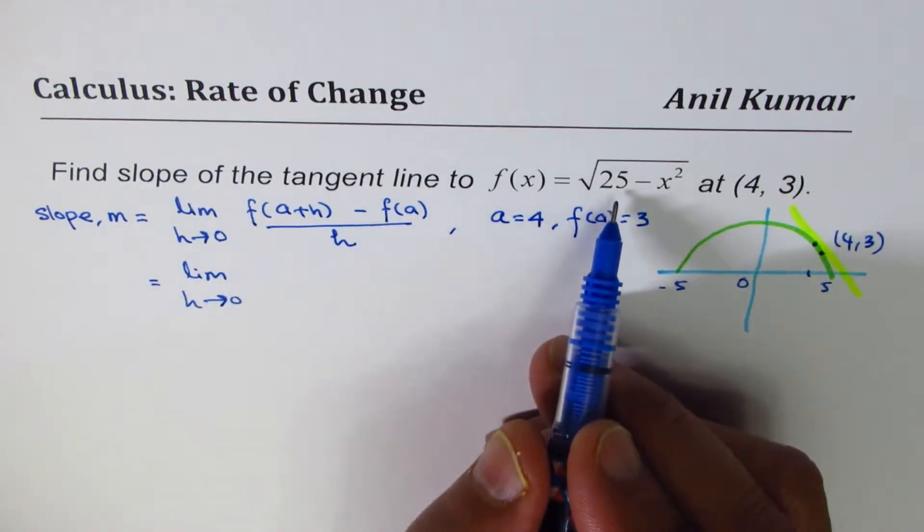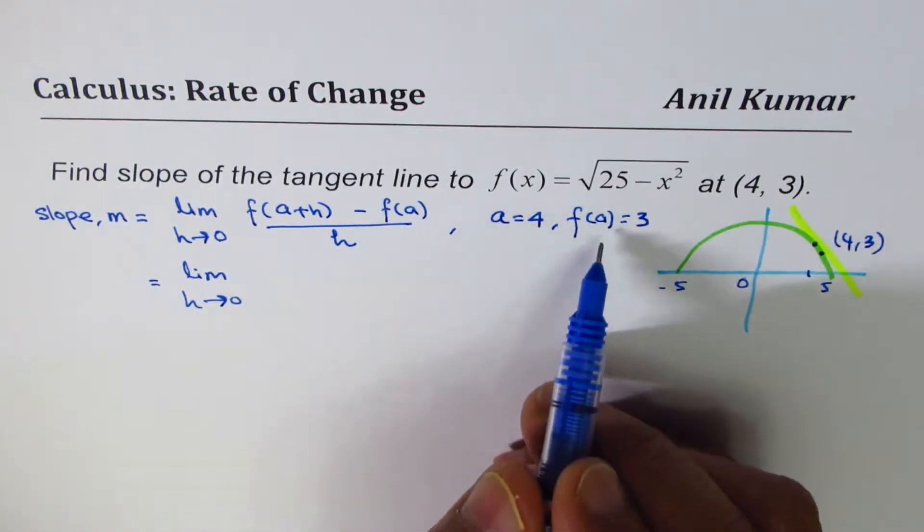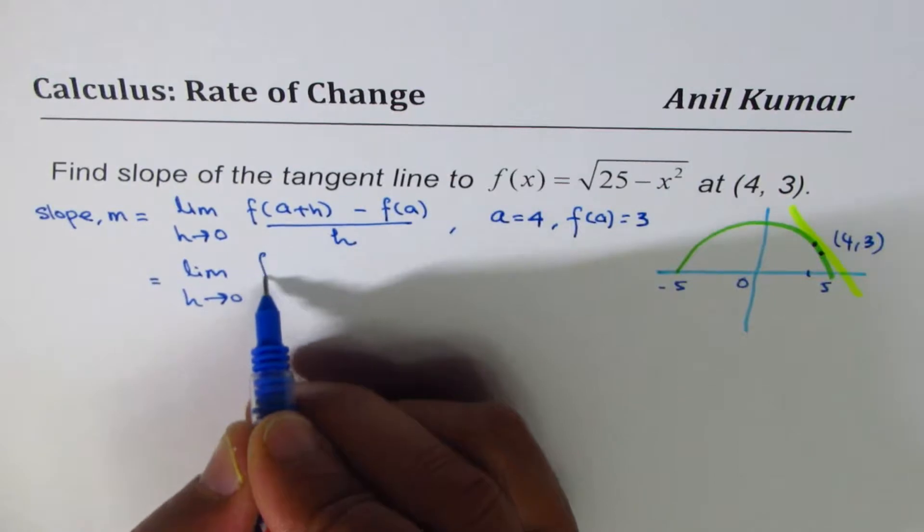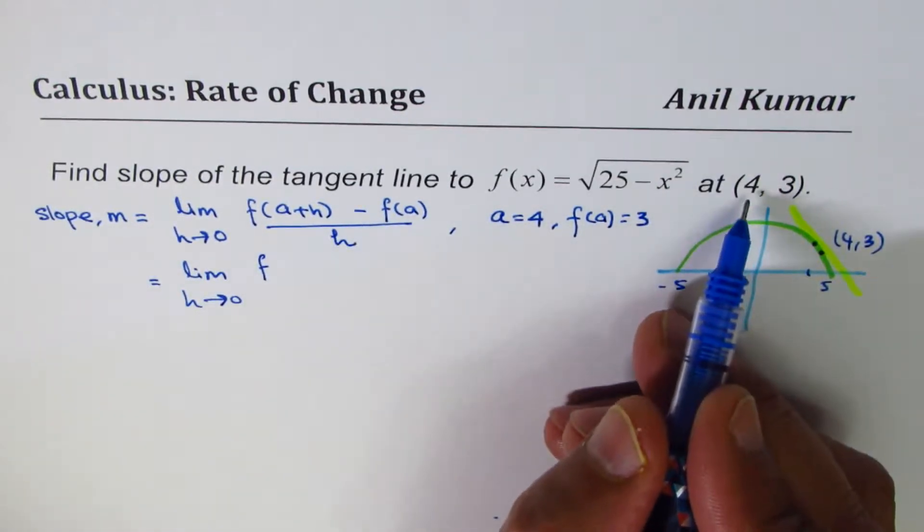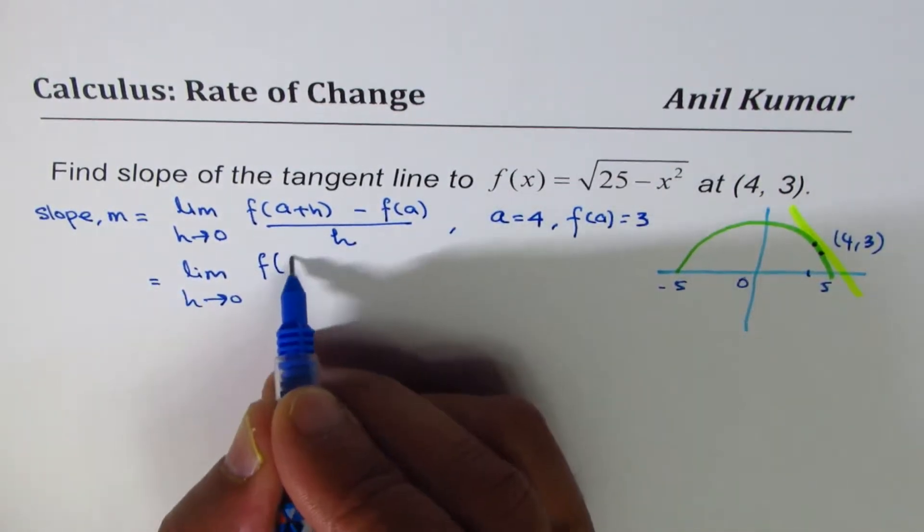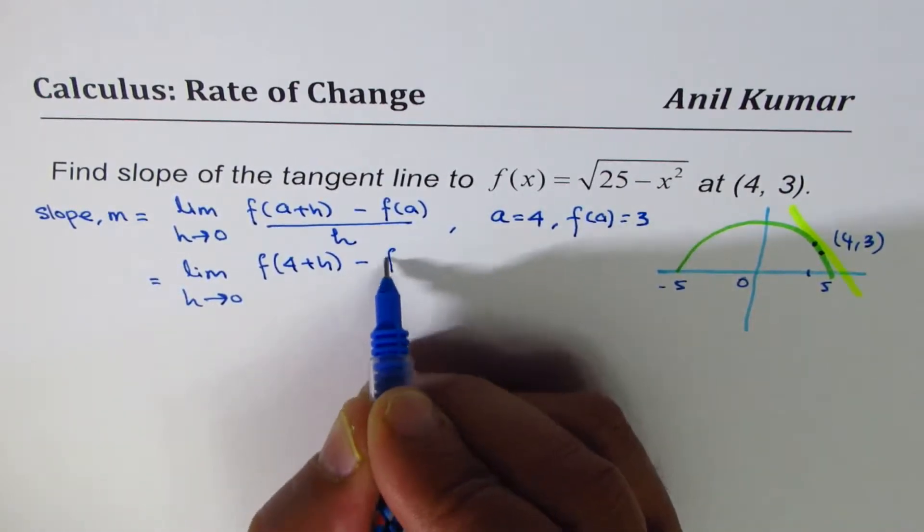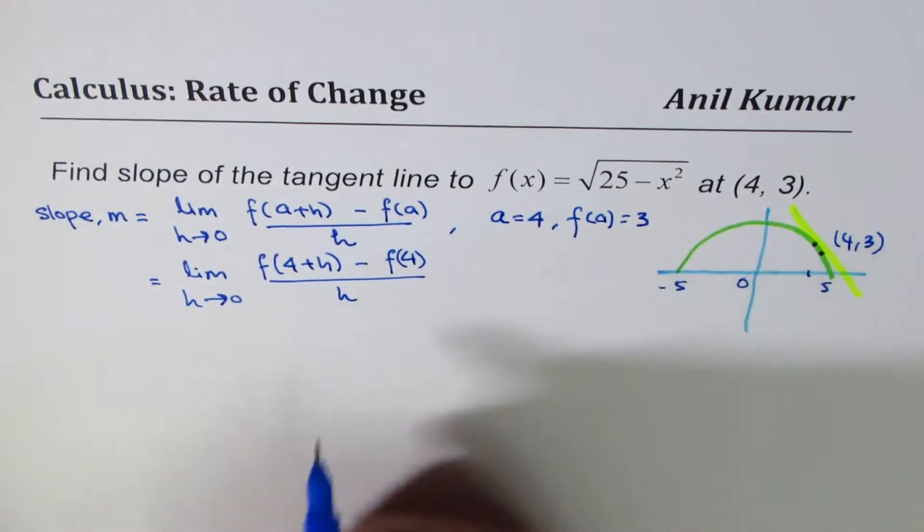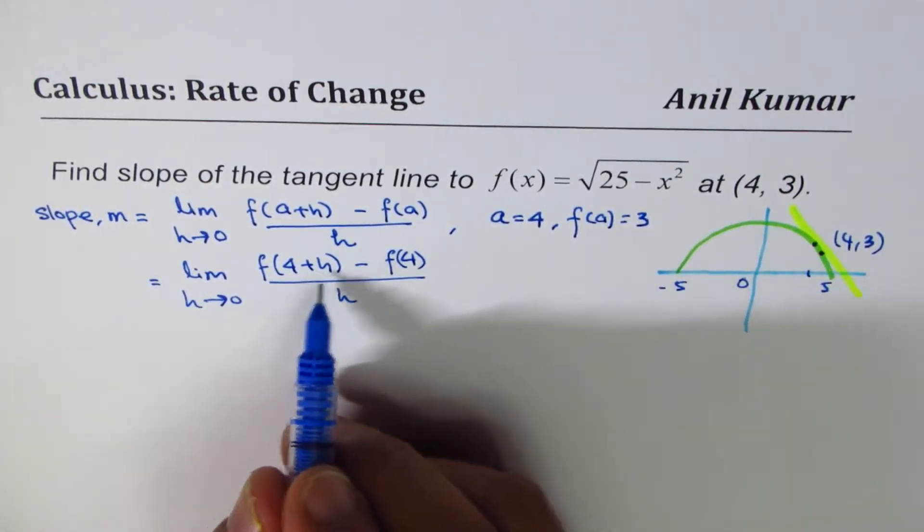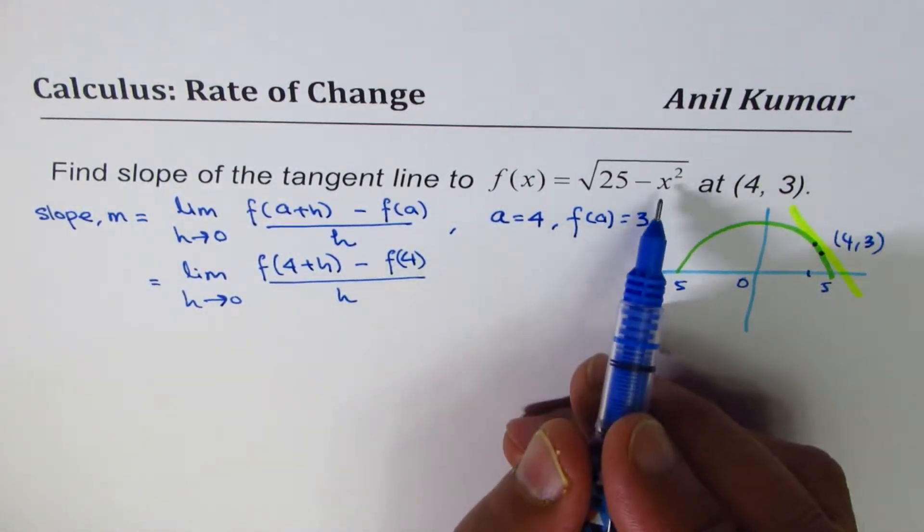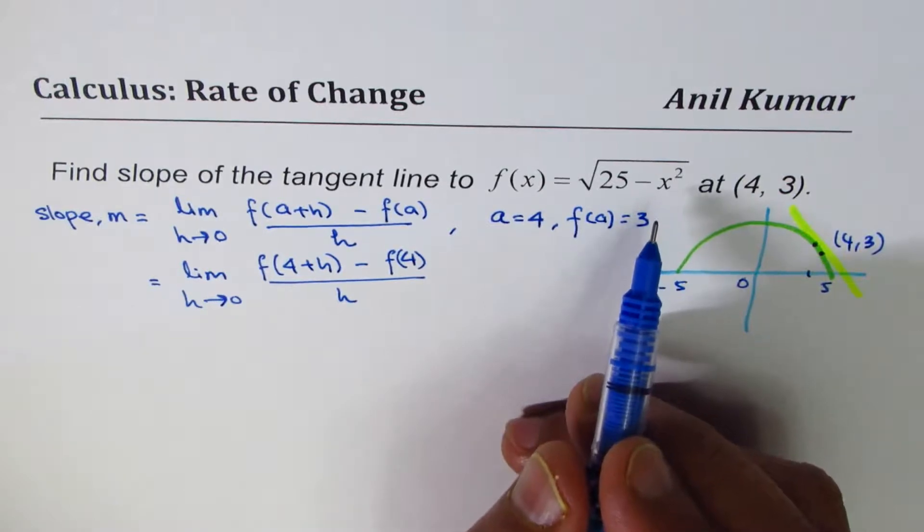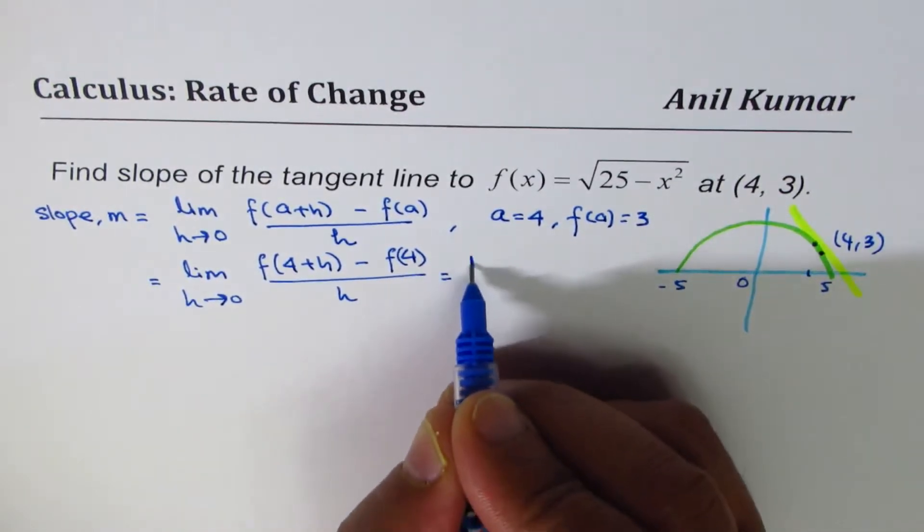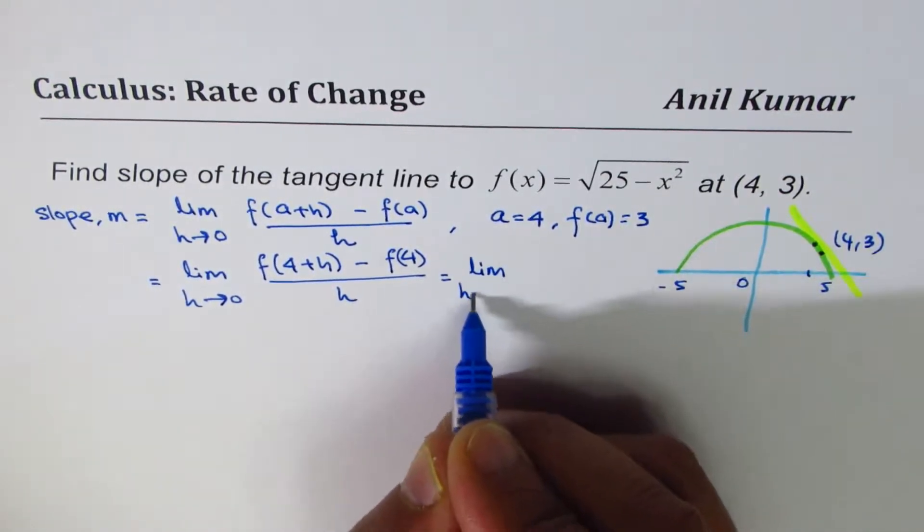Now, in this particular function, let me first write this formula with the point a, which is 4. So let us say f(4+h) minus f(4) over h. Now, what is f(4+h)? We have to replace x with 4 plus h. So we'll write this as limit, h approaches 0,